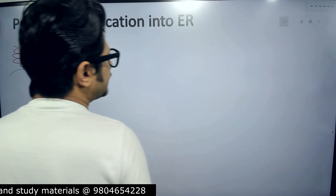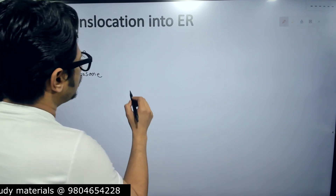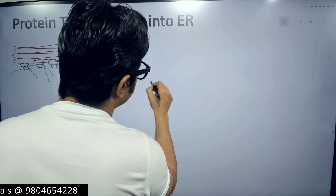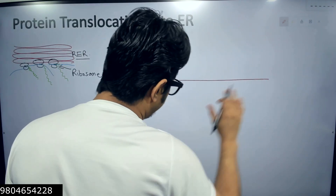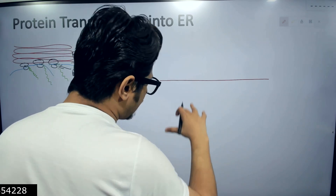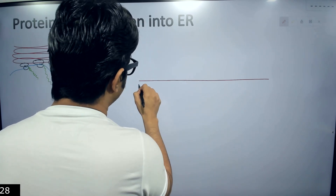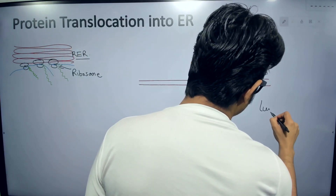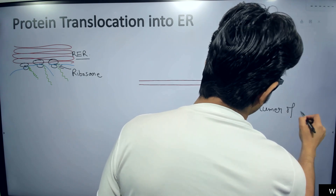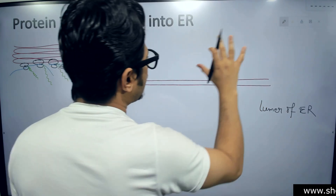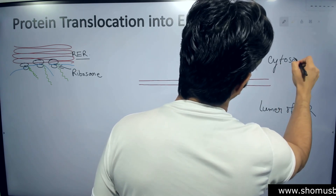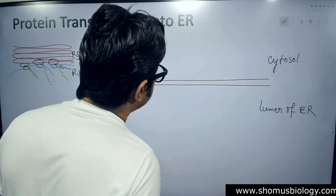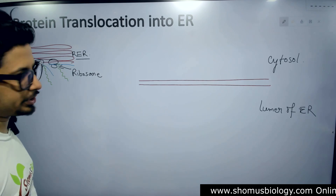To understand that, I will draw the endoplasmic reticulum structure again. This is the endoplasmic reticulum membrane. The inside of this membrane is the lumen — this is the lumen of the ER — and this outside region is the cytosol. Now, what we try to understand is how exactly the process of protein translocation takes place.